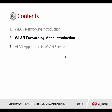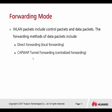Forwarding mode introduction. WLAN packets include the control packet and the data packet — two different packet types. Control packets are used by the AC and the AP. Data packets are our user data packets. The forwarding methods for data packets include direct forwarding, also called local forwarding, CAPWAP tunnel forwarding, or centralized forwarding.